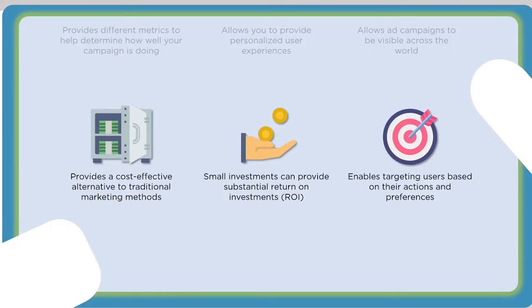Another use for digital marketing: it enables targeting users based on their actions and preferences. In Google Ads targeting the Display Network, you have demographics, topics, interests, retargeted audiences, segmented audiences, age, and gender — a lot of options to hone in on who you want to target. You can also set up remarketing: if someone visits your website and does not purchase, you can retarget that group of people who didn't purchase. That's the beauty of digital marketing — it allows you to target users based on their actions.